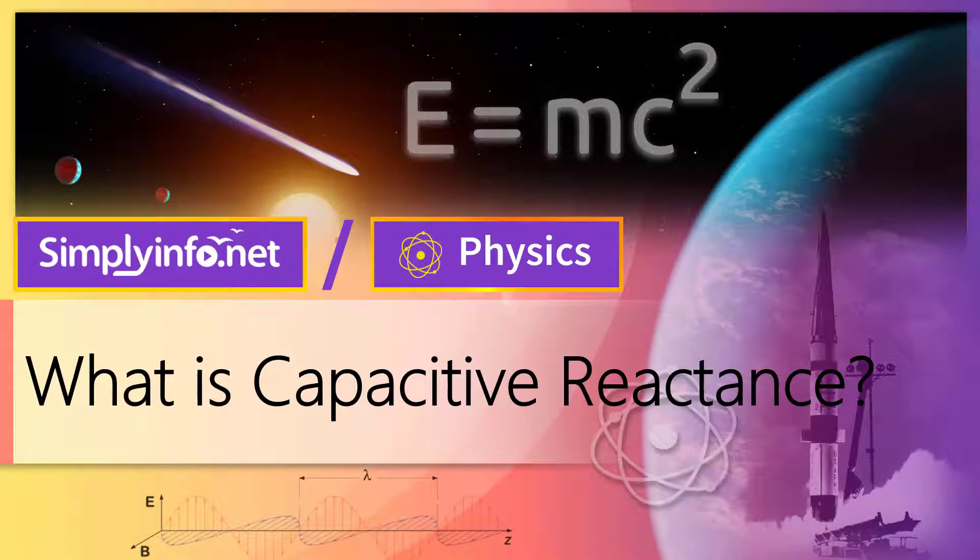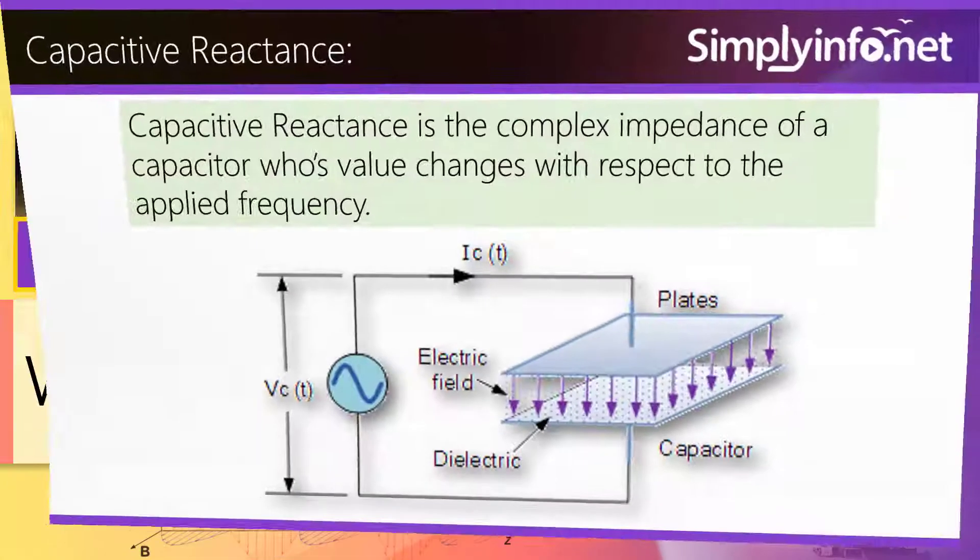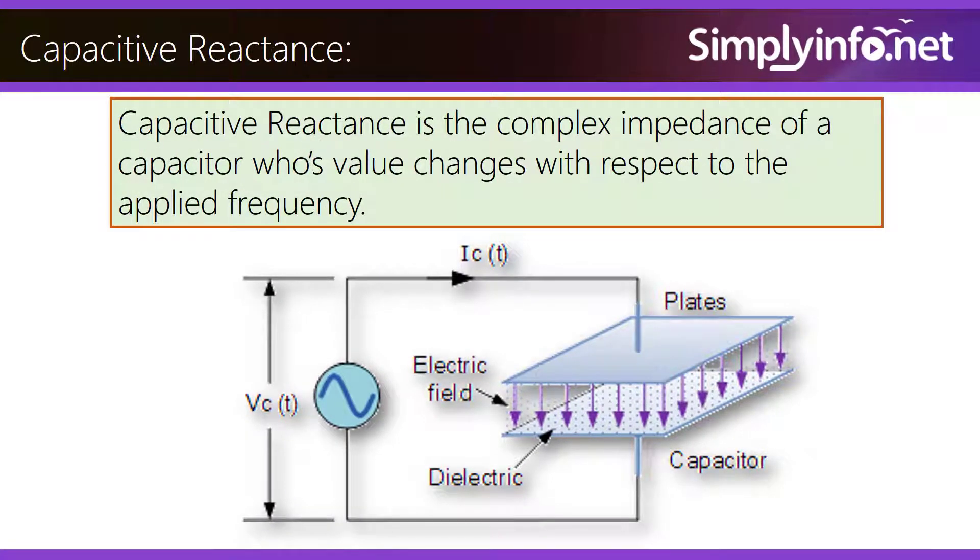What is Capacitive Reactance? Capacitive Reactance is a complex impedance of a capacitor whose value changes with respect to the applied frequency.